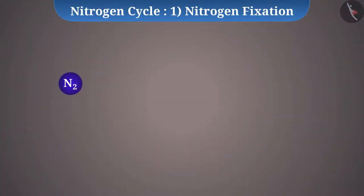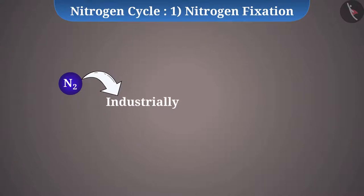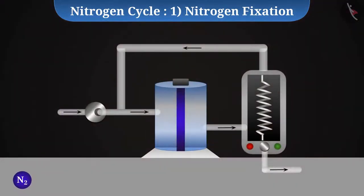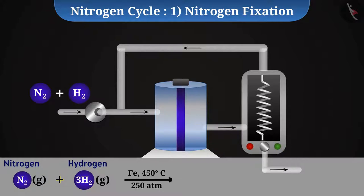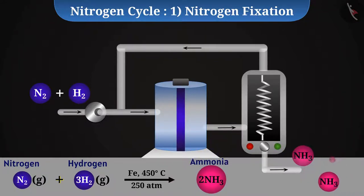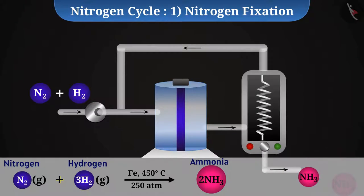Nitrogen can also be fixed industrially. Nitrogen is combined with hydrogen at high temperature and pressure to obtain ammonia, which is then converted into various fertilizers such as urea.